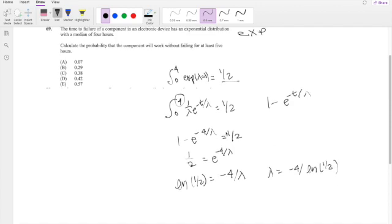And then they ask you, calculate the probability that a component will work without failing for at least 5 hours. So at least 5 hours means if this is 5 hours, it's greater than that hour right here. So this is exactly 1 minus the probability of x including 5 hours, right? Because if you take 1 minus, including 5, you get more than 5 hours.